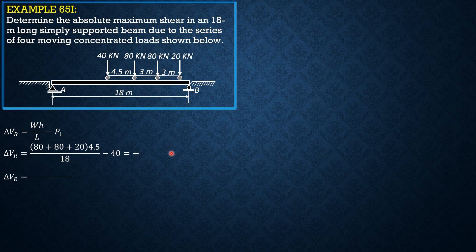So ΔVr equals 80 plus 20 times 3 over 18 minus 80, and this time it is negative. So the preceding position of loads gives the maximum reaction at A, and the preceding position was this 80 kilonewton load is over A, so let's draw it.